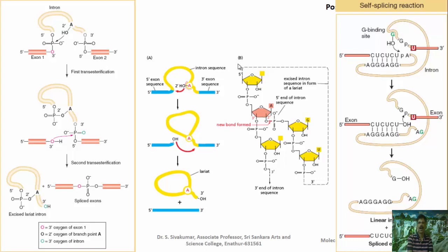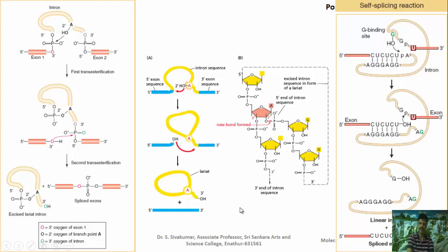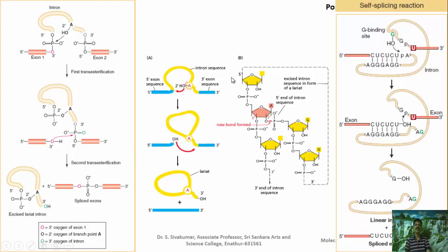Both group 1 and group 2 intron splicing mechanisms are used in eukaryotic rRNA. Importantly, these reactions require no protein involvement — the splicing is carried out by the RNA itself. RNA molecules that perform self-splicing reactions behave like enzymes and are called ribozymes. RNA with enzyme-like catalytic activity is termed a ribozyme, and the reactions are called self-splicing reactions.